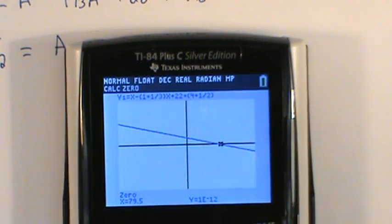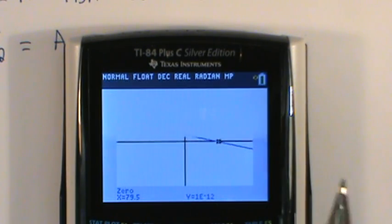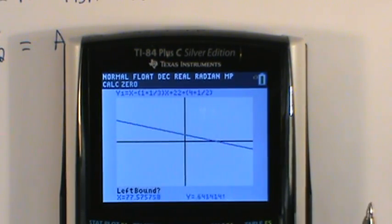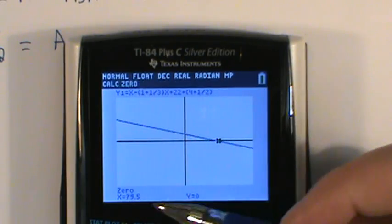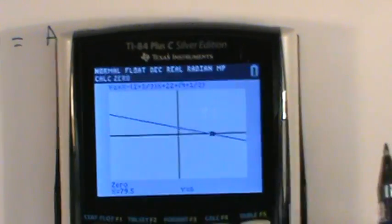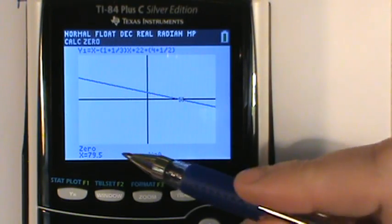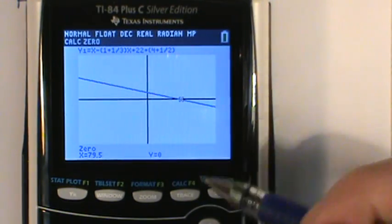We'll go through a second example here in a minute. Just to recap, when you call this up at second calc, you're looking for zero. You need a value that falls to the left of where it crosses the x-axis. So I hit enter. A value to the right. A guess. And then it automatically reports that value. And you see this time when I did it, it actually told me y equals zero. So I'm very confident that my answer was 79.5.